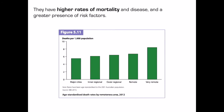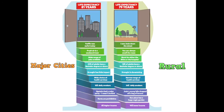People in rural and remote areas have higher rates of mortality and disease and a greater presence of risk factors. The nature of health inequities refers to what the health inequities are, and the extent refers to how severe. When comparing major cities with rural communities, life expectancy is higher in major cities. Rural communities have higher rates of smoking, alcohol consumption, lower levels of income and education, and are more likely to be affected by natural disaster. There are some positives, such as wide open spaces, fresh air, access to fresh food and a greater sense of community.